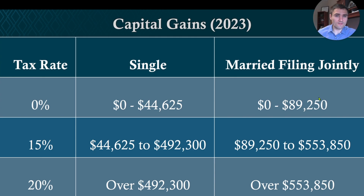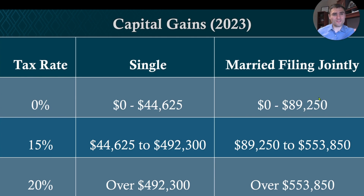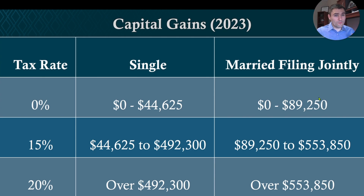Another strategy we use with clients is investing in non-qualified investments that have capital gains treatment, where we try to defer those capital gains for years when income is lower so we can utilize the 0% bracket — or defer them so that at death, there's a stepped-up basis to the spouse, kids, or other beneficiaries. To do this, you might invest in individual stocks that don't spit out capital gains every year, pick stocks with lower dividends, or invest in index funds with lower dividends that don't trade as frequently as a mutual fund. We typically advise against mutual funds in this strategy because mutual funds generate phantom gains every year.